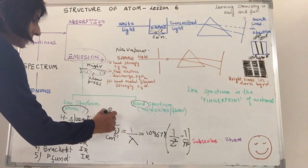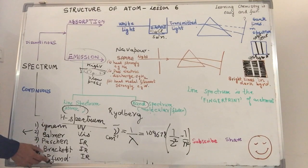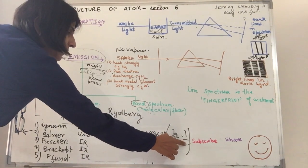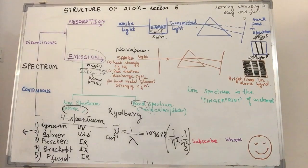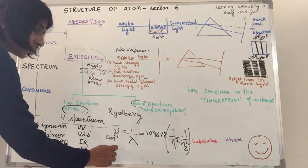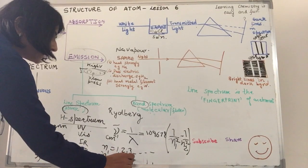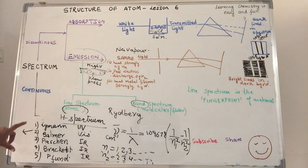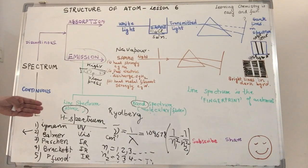Later on, Rydberg modified the equation in order to incorporate the explanation for all the different zones and he said that instead of 2 square, we will put n1 and n2 over here. Now what are these n1 and n2? These n1 and n2 are nothing but whole number values. So you have n1 is 1, 2, 3, 4 and so on. Your n2 is also 2, 3, 4 and so on till infinity. In order to explain why we are getting lines in the 5 zones of the spectrum or in order to be able to calculate or correlate your observation with the theoretical values. This is called as the line spectrum.